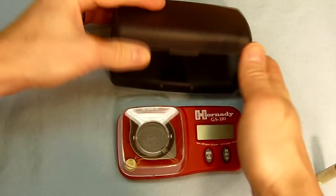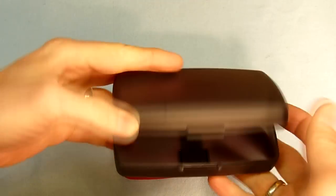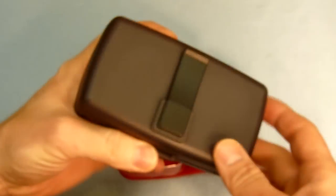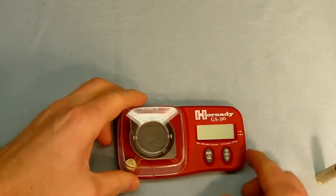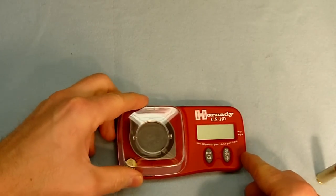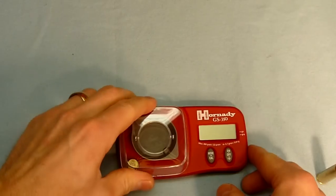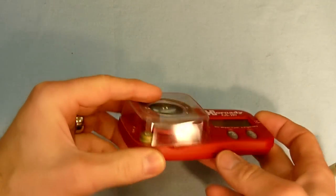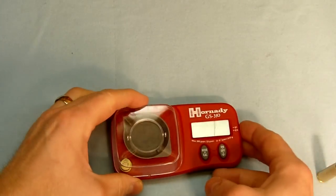This scale comes with a case which holds the electronic scale with the belt clip, so you can take it with you. Some other handy features about this particular electronic scale include a protective cover which keeps the tray in place and also the calibration weight.